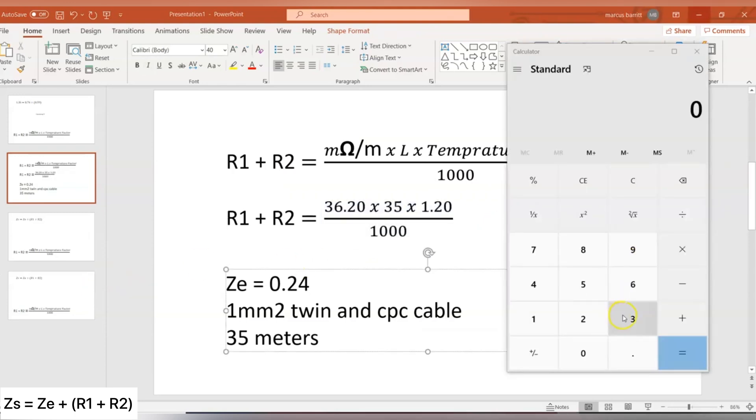Then I'm going to bring my calculator up. 36.20, so that's the milliohm per metre value, multiply that by the length, which is 35, multiply that by temperature factor—remember we used incorporated in a cable, or bunched with other cables, so it might be singles in the conduit, they're bunched together.